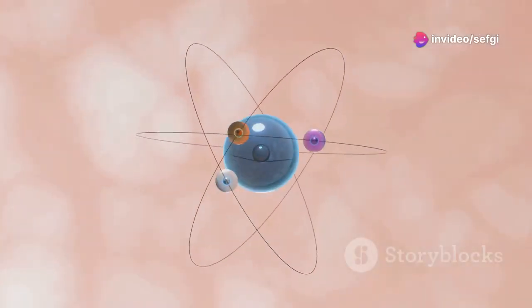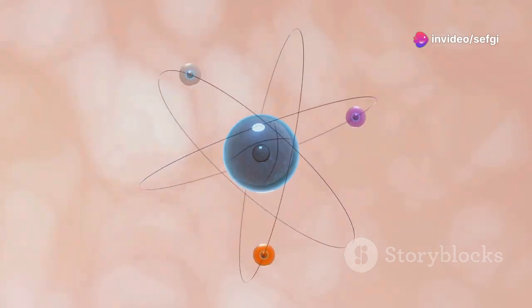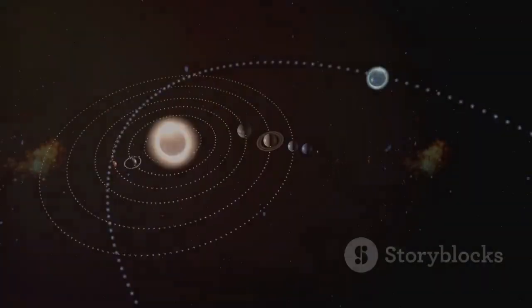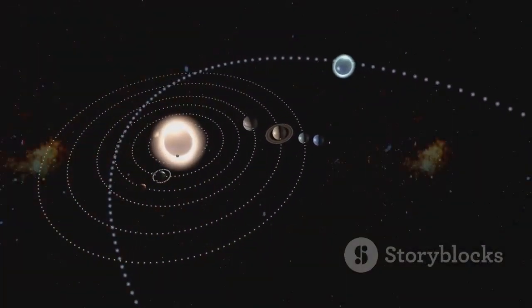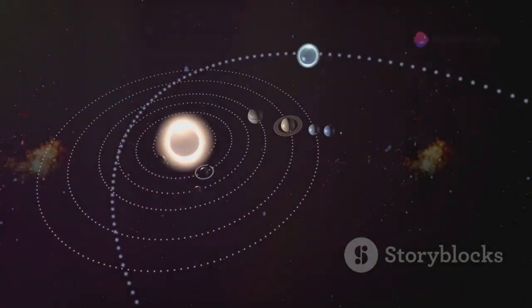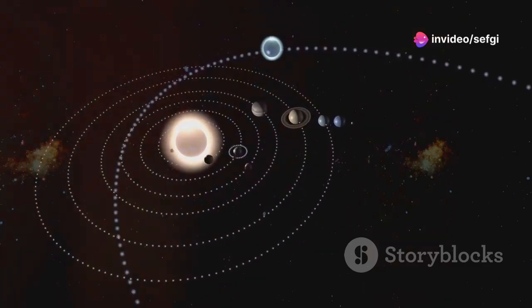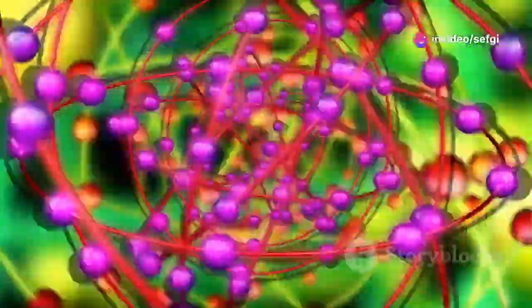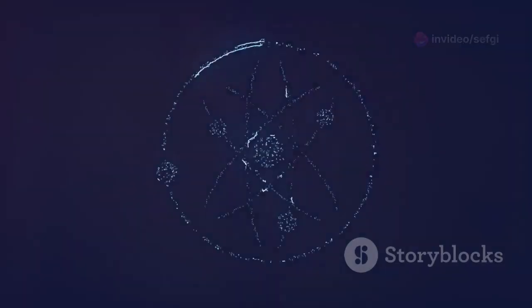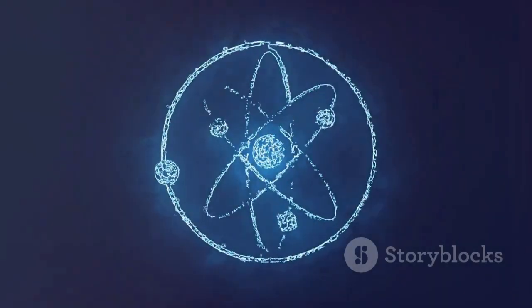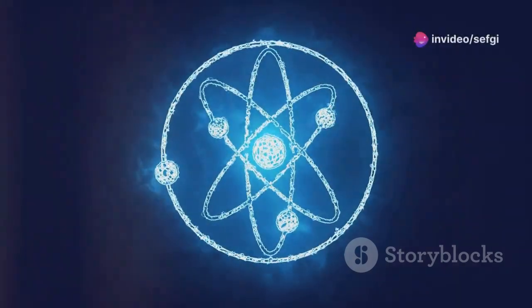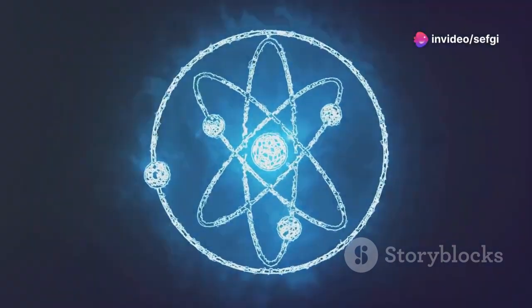For example, electrons don't orbit the nucleus like planets around the sun. The classical image of electrons as tiny planets circling a central nucleus is an oversimplification. Instead, electrons exist in regions of space called orbitals, where they are likely to be found. They exist in a cloud-like state, their position and momentum governed by probabilities rather than precise locations. This cloud represents the areas where an electron is most likely to be found, but we can never pinpoint its exact location at any given moment.